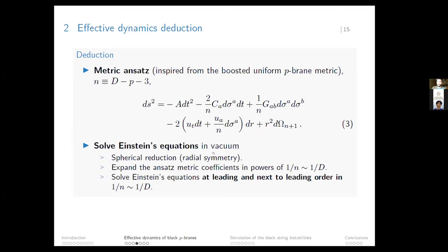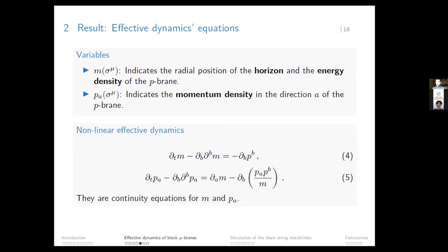The procedure has a few steps. First, we perform a spherical reduction, taking advantage of the radial symmetry to reduce the number of equations to solve. Then we expand the metric coefficients in powers of one over d. With this we solve the Einstein equations at leading and next-to-leading order in the expansion parameter. After this process, what we get are the effective dynamics—the dynamics of variables that describe the shape of the p-brane. The variable m depends on the worldvolume position and indicates the size of the horizon and equivalently the energy density at a given point.